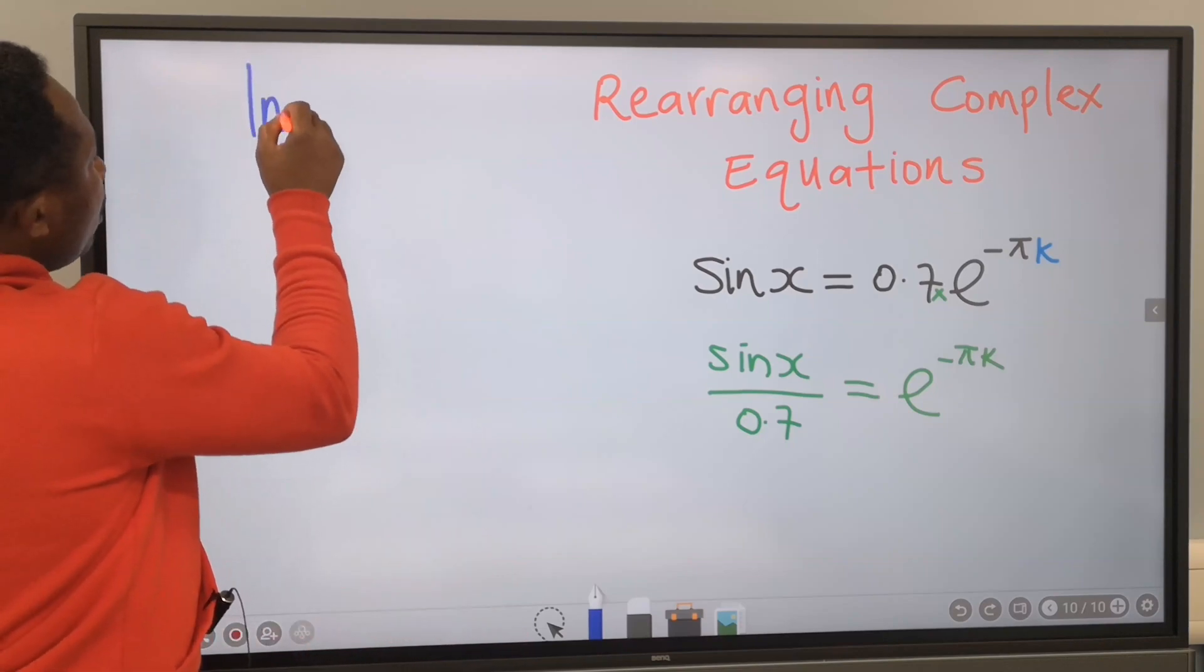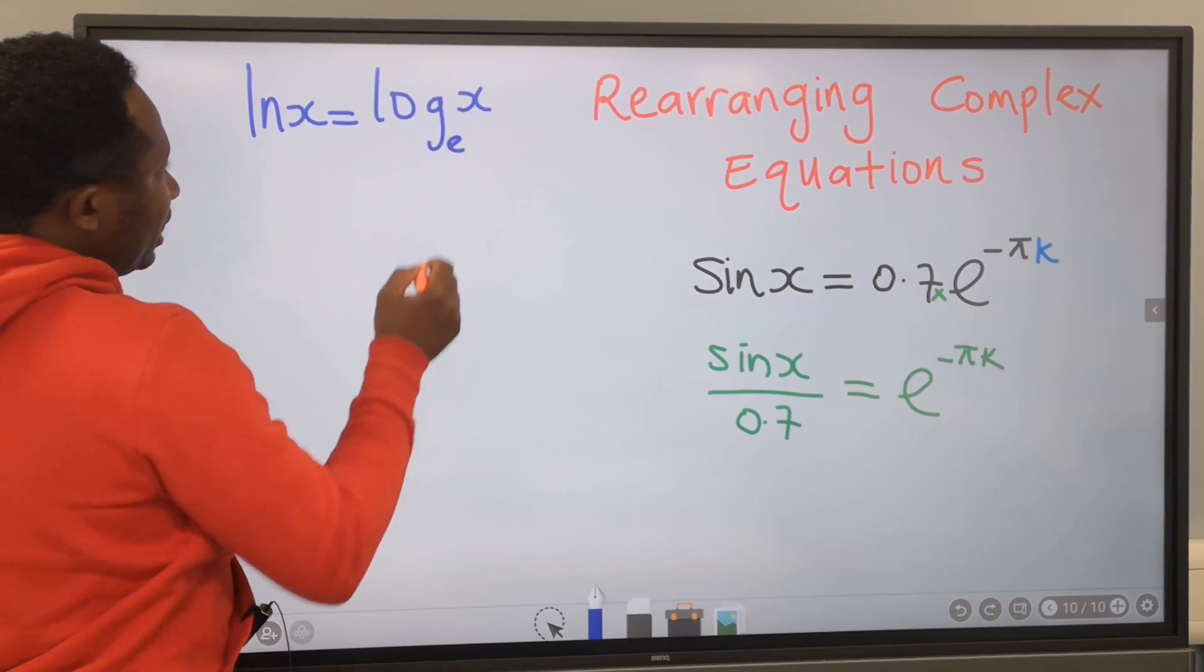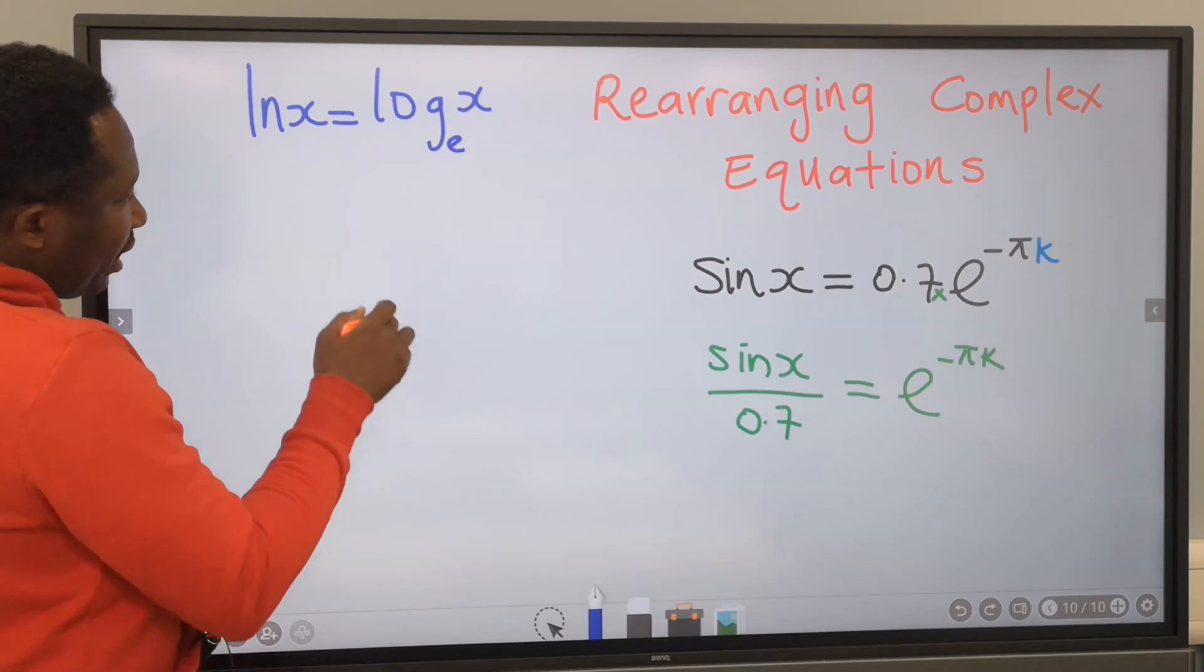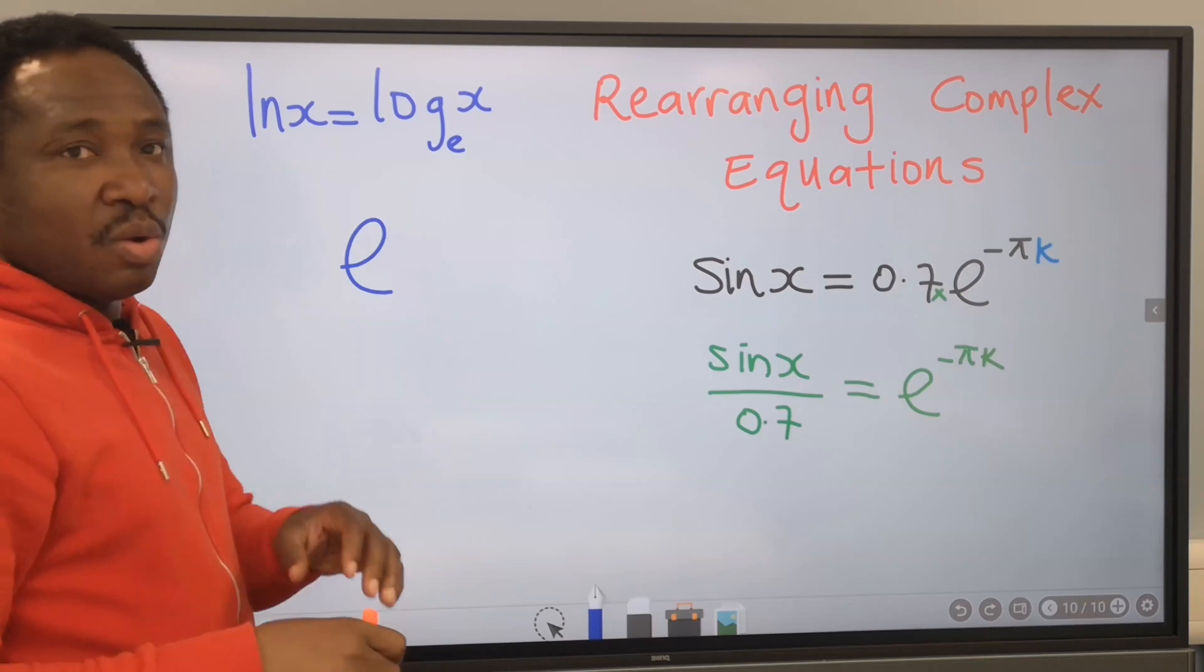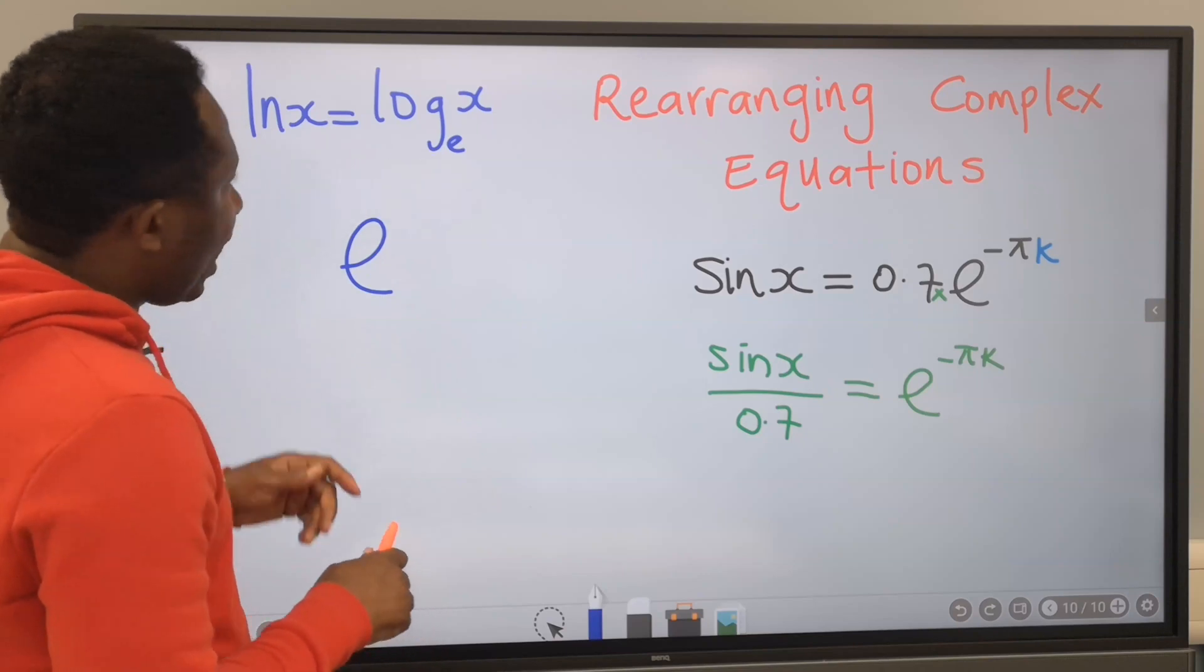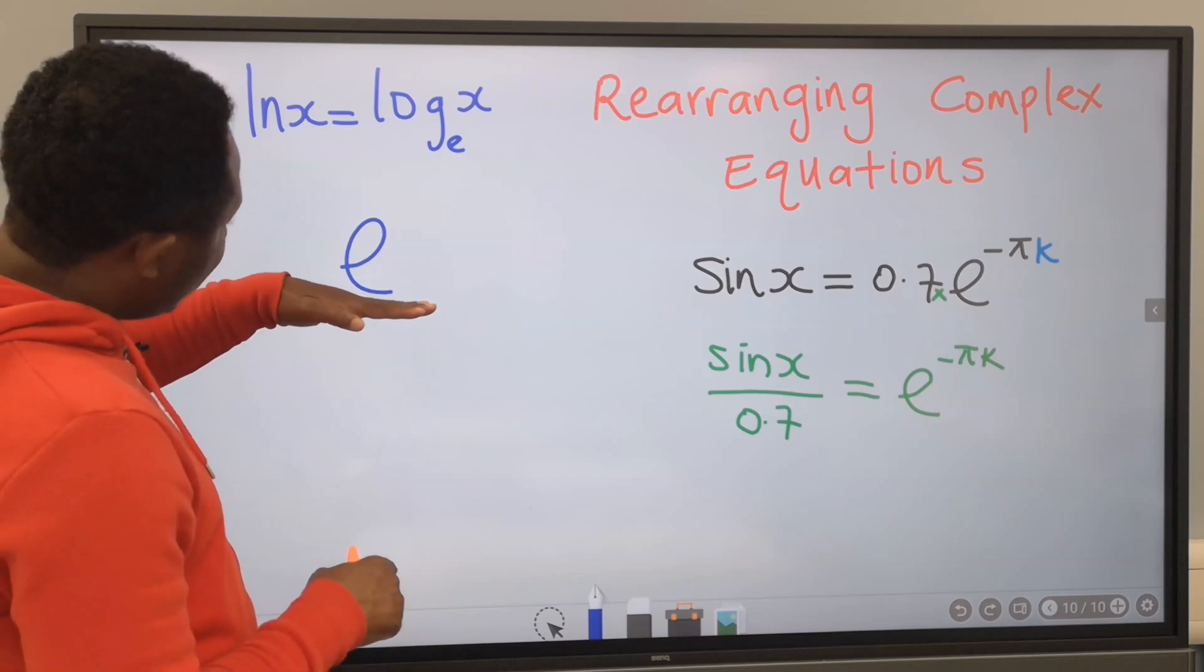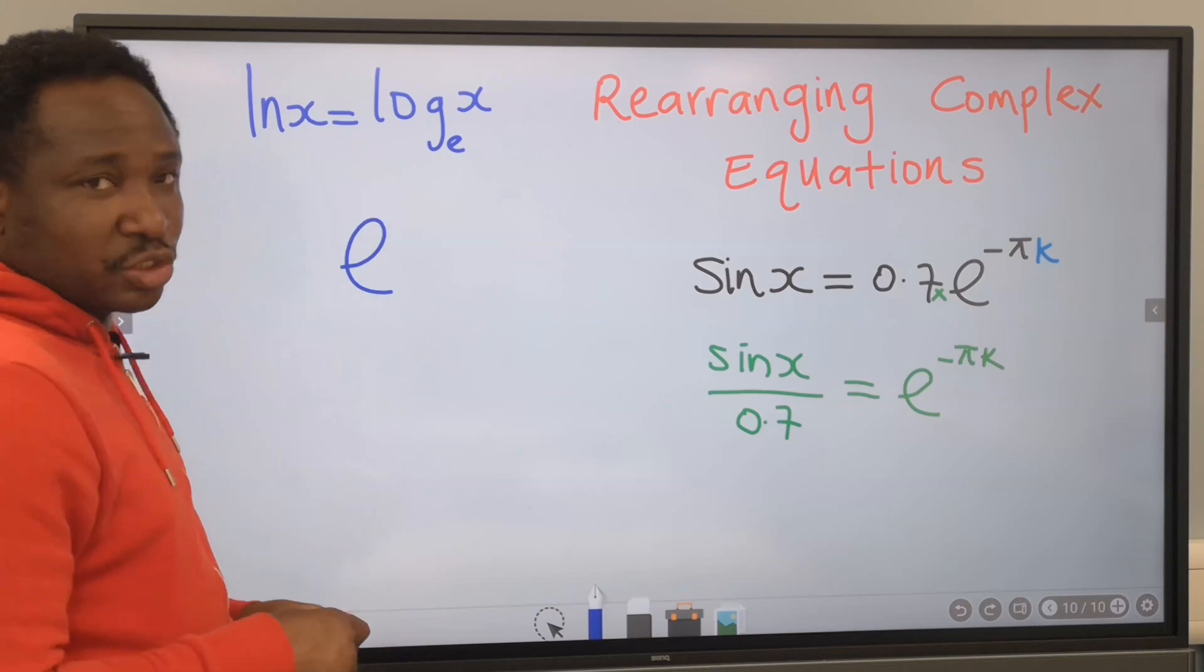In mathematics, the natural log of x is the same thing as log base e of x. The natural log and exponential do not agree in mathematics. Whenever you want to eliminate natural log in an equation, you introduce exponential. And whenever you want to eliminate exponential in an equation, you introduce natural log.